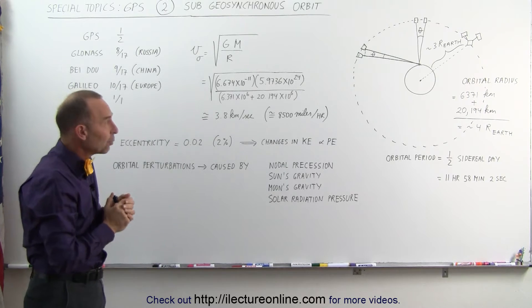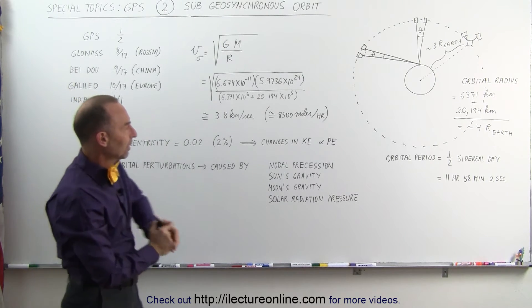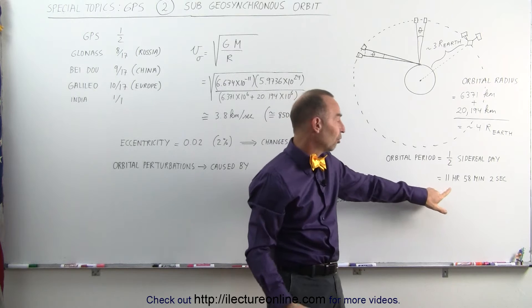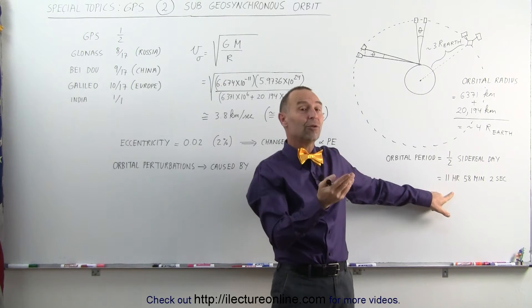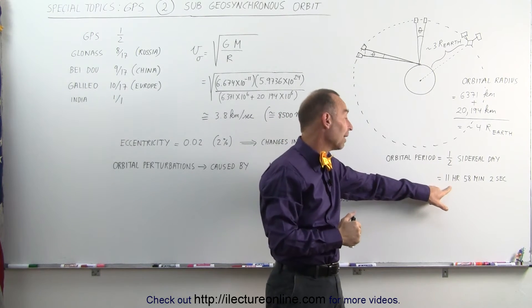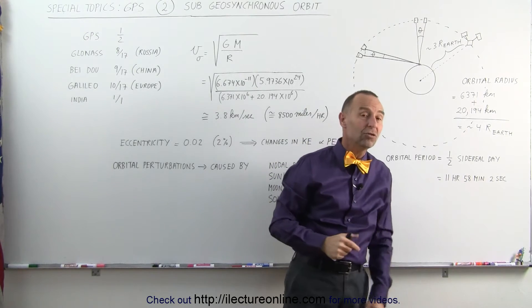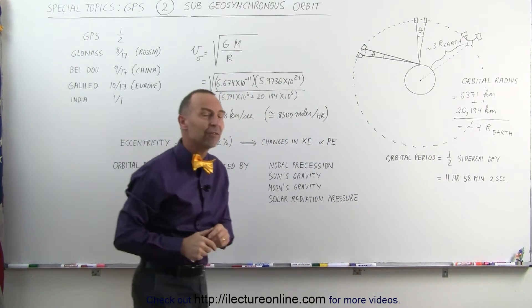One rotation of a sidereal day, and do I have it up here somewhere? Yes. One rotation is 23 hours 56 minutes and 4 seconds, so half of that would be 11 hours 58 minutes and 2 seconds. That's exactly half of a sidereal day.